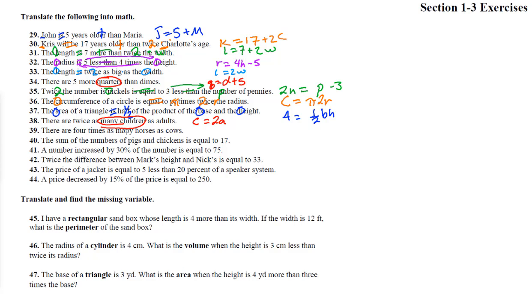Number 39: there are four times as many horses as cows — the horses are the larger number — so horses are four times the number of cows: H = 4C. Number 40: the sum of pigs and chickens — sum means a plus sign — so P plus C equals 17.